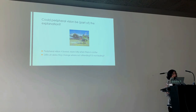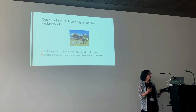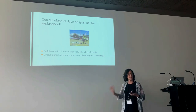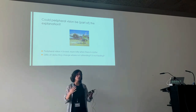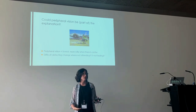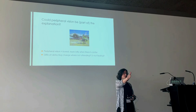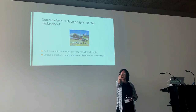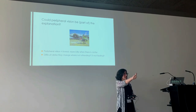We all know peripheral vision is impoverished compared to foveal vision, especially where there's clutter. Could it be that detecting change is difficult not because you're not attending to the change, but because you're not looking at it or not looking close enough? I'm using 'peripheral vision' to mean everything outside of your rod-free fovea — about the size of your thumbnail at arm's length. Try looking at things outside that region, especially 20 or 40 degrees out, and you'll see your vision is not so good out there in the periphery.